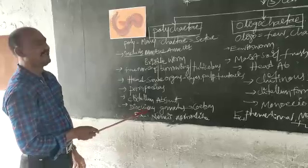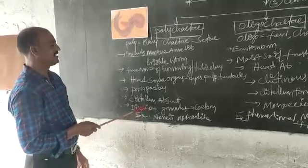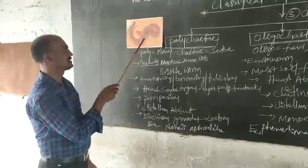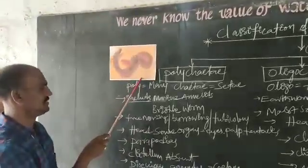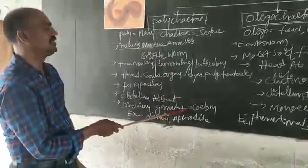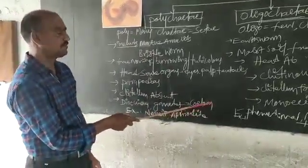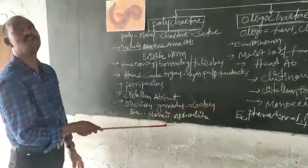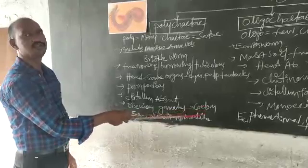They are dioecious. Dioecious means sexes are separated. Example, Nereis. Gametes are there. These gametes are related to the coelom. From the coelom, gametes can be passed out through the nephridiopore.